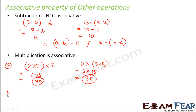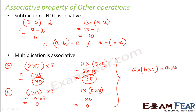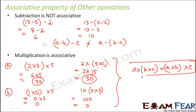Let us take another example: (1 into 0) multiplied by 3. So 1 into 0 is 0 into 3, which equals 0. Now the same thing in a different format: 1 into (0 into 3) equals 1 into 0, which also equals 0. In both cases we observe that A into (B into C) equals (A into B) into C. So multiplication is associative in whole numbers.